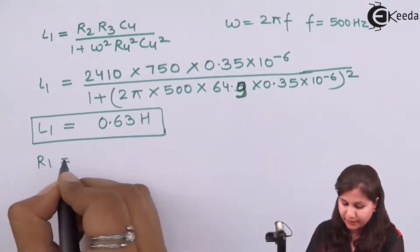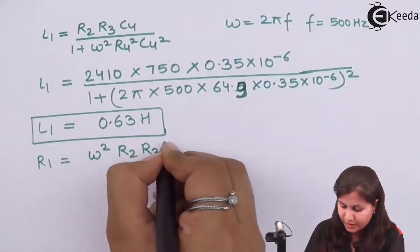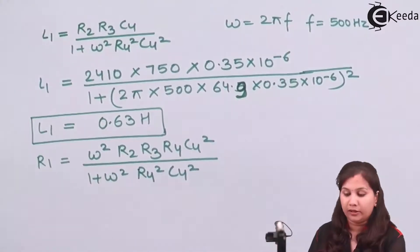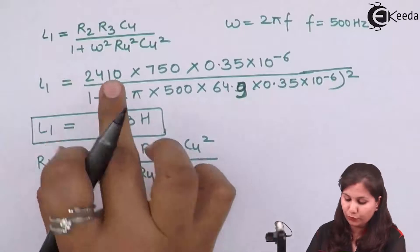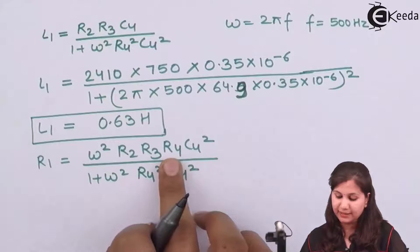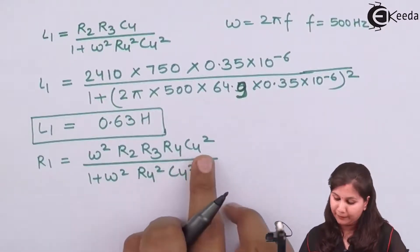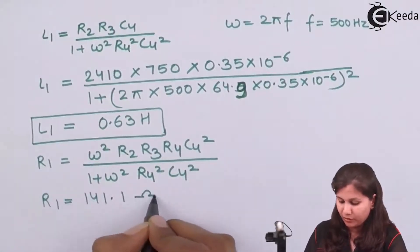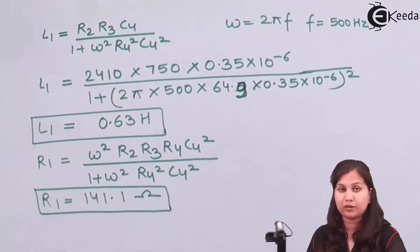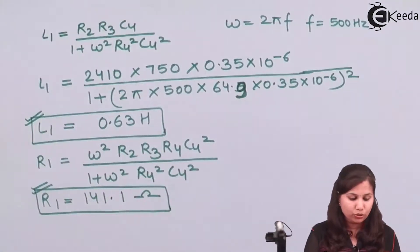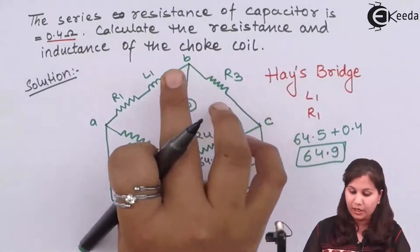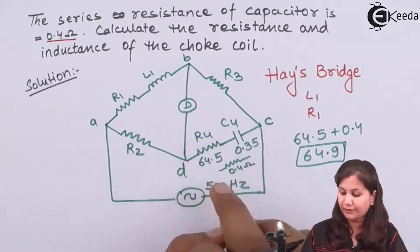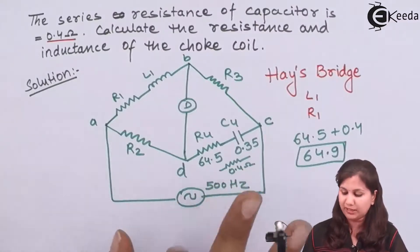Now we calculate R1 using the formula ω²·R2·R3·R4·C4² / (1 + ω²·R4²·C4²). Substituting R2 = 2410, R3 = 750, R4 = 64.9, C4 = 0.35 × 10⁻⁶, ω = 2π × 500, we get R1 = 141.1 Ω. Remember to use R4 = 64.5 + 0.4 = 64.9 Ω to account for the series resistance of the capacitor.